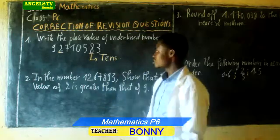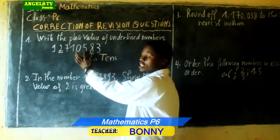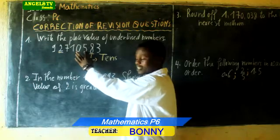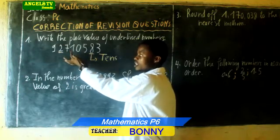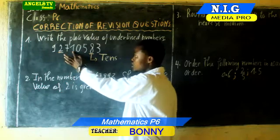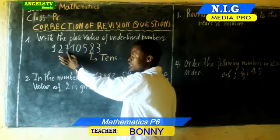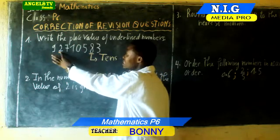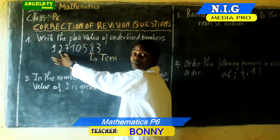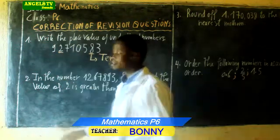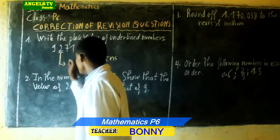Then the next number is 100s, it means 1000s, then 10,000s, then next is 100,000s. Then this underlined number belongs to millions. Millions.